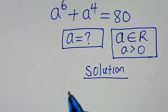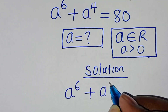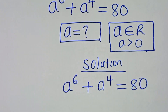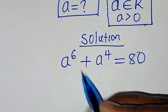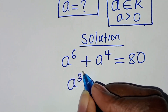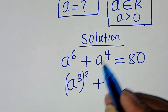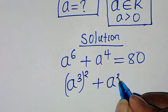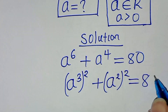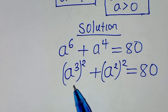We have our problem: a to the power of 6 plus a to the power of 4 equals 80. We can express a to the power of 6 as a to the power of 3, raised to the power of 2, then plus a to the power of 4 expressed as a to the power of 2, raised to the power of 2. This is equal to 80.